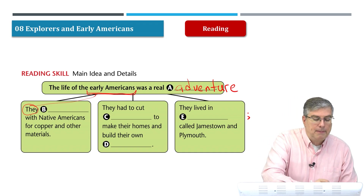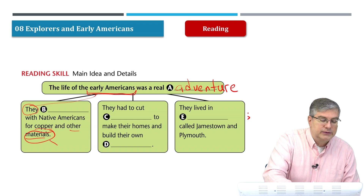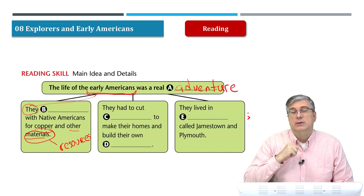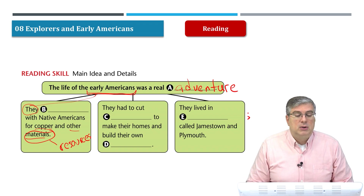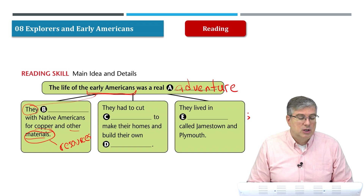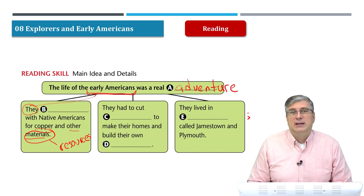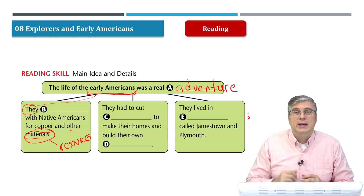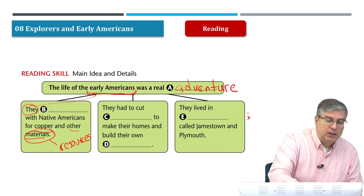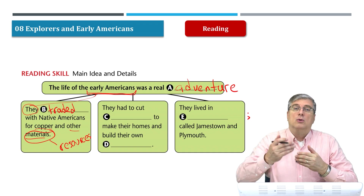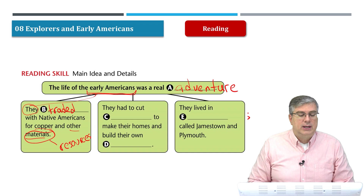The early Americans traded with Native Americans for copper and other materials — we can also say natural resources. Natural resources are the materials you get from nature that you use for something. People used copper to make pots, cooking pans, and other materials to make homes and furniture. The Native Americans had a lot of resources; the colonists had other things like guns. The Native Americans liked beads or jewelry, so they would trade. Trade was very important for both economies.